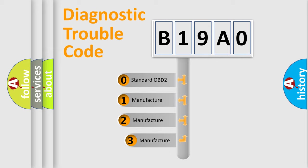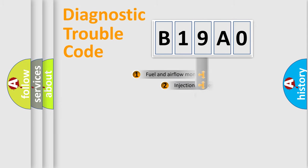If the second character is expressed as zero, it is a standardized error. In the case of numbers 1, 2, or 3, it is a more specific expression of a car-specific error.